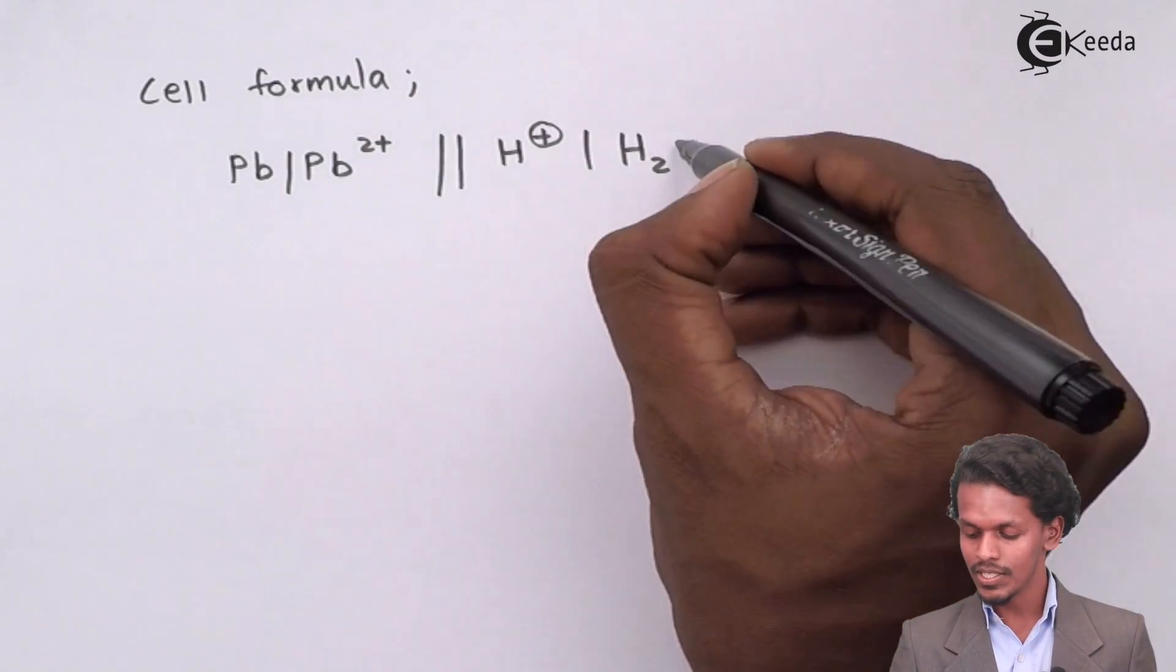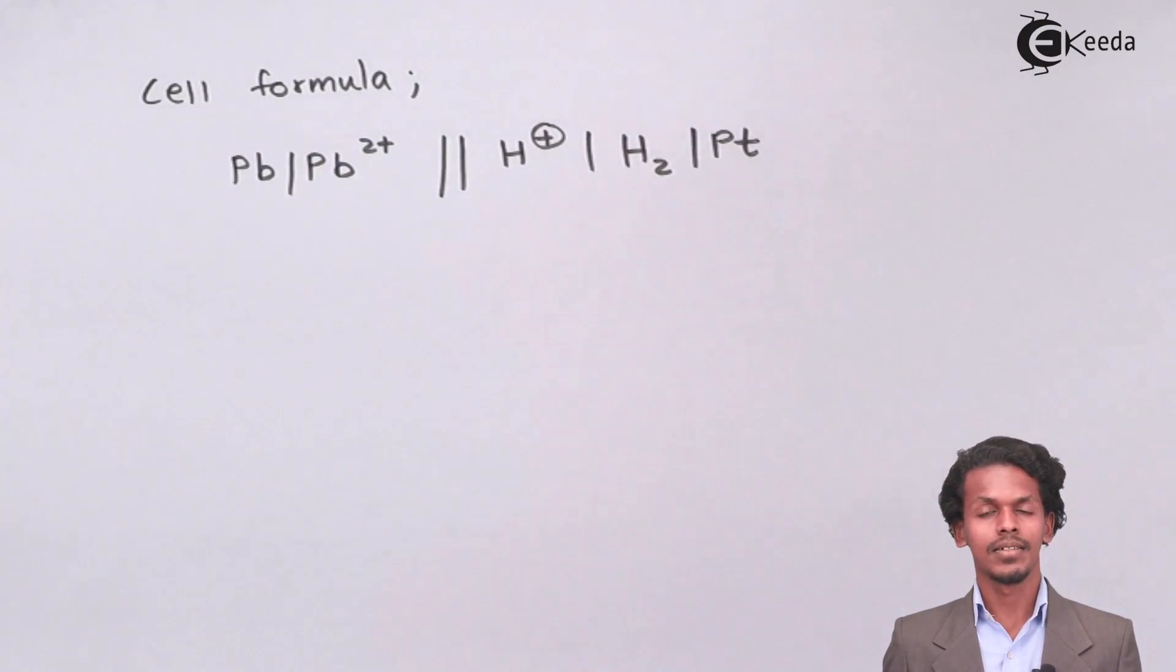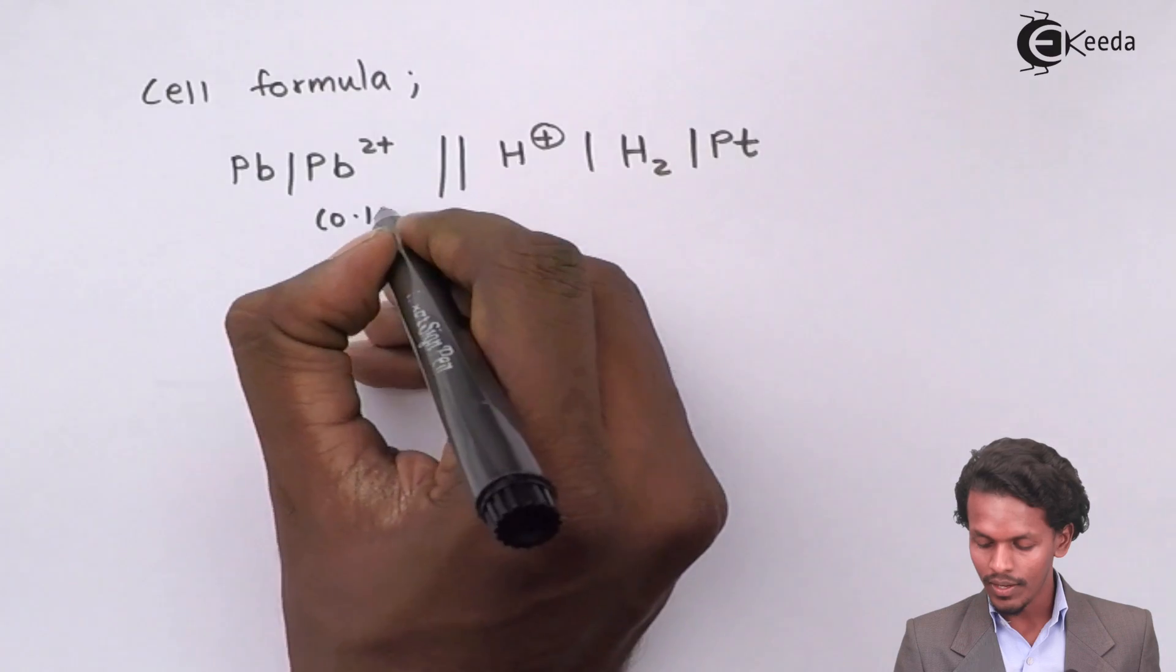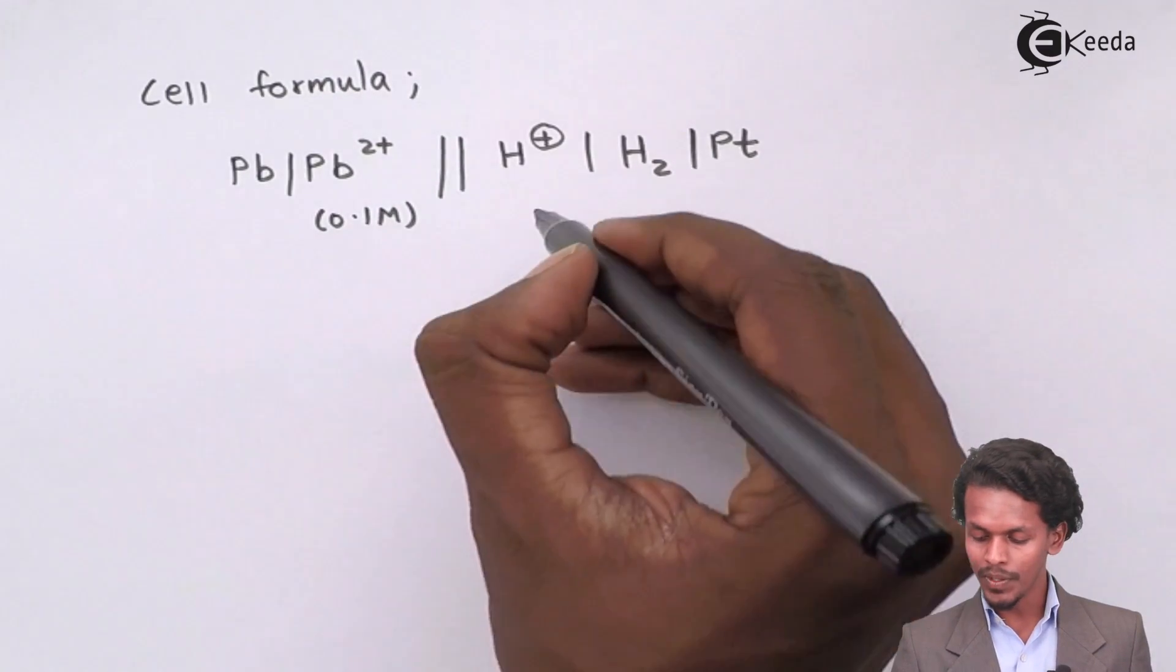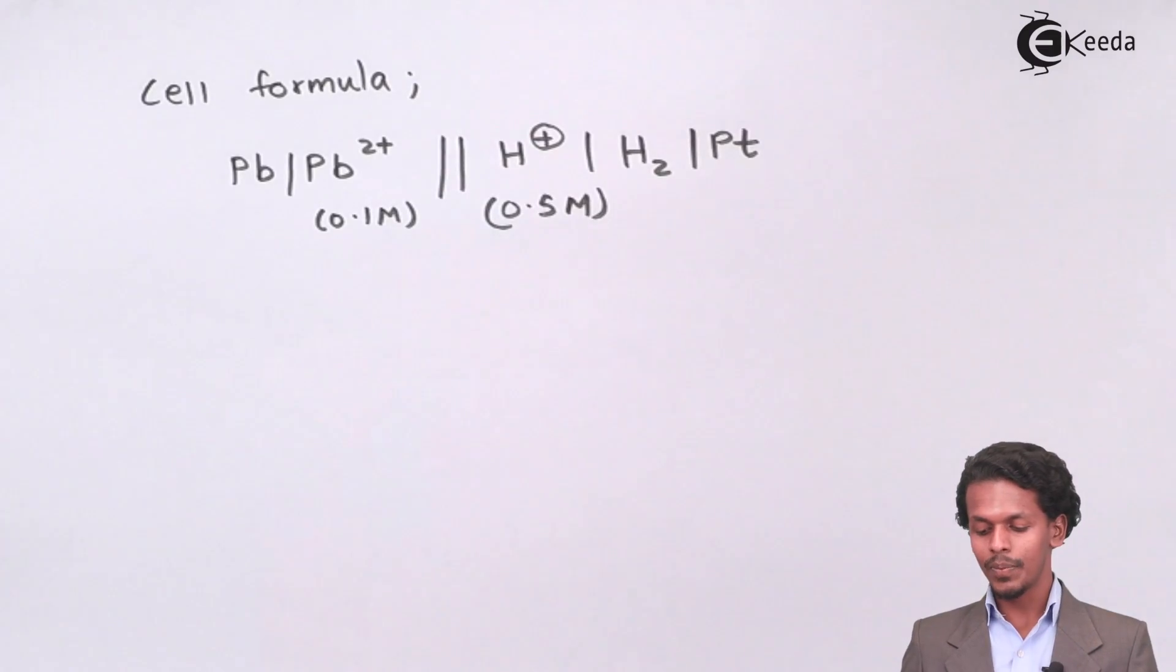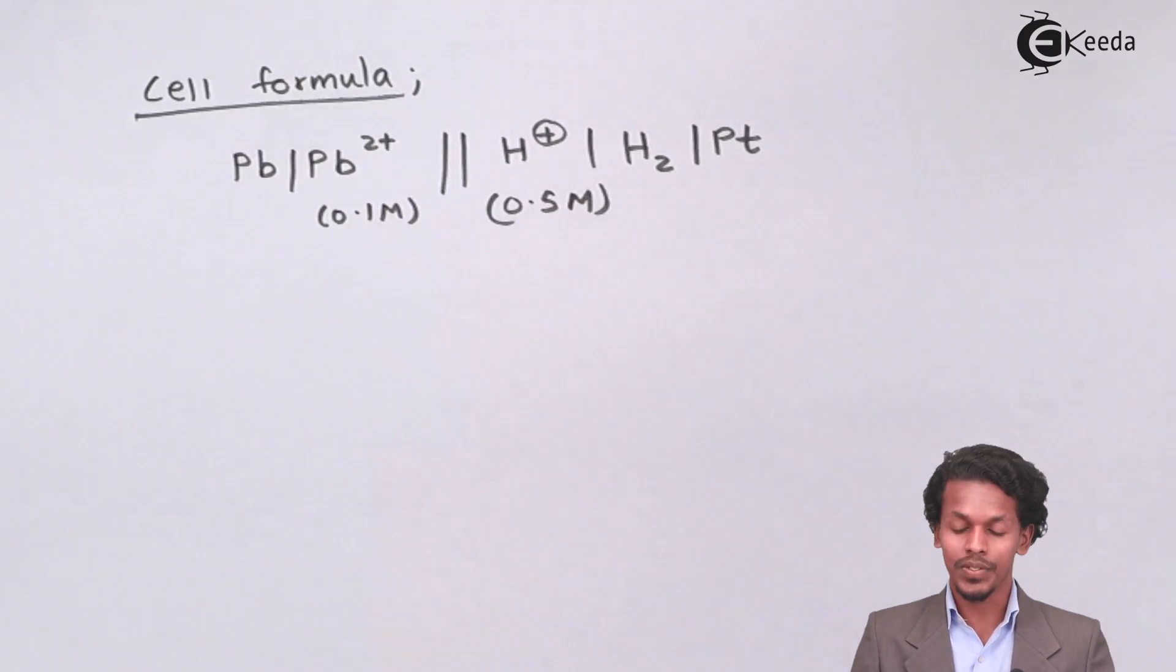For that, we have to attach an inert electrode also because H2 is present in gaseous form. We can usually add platinum as an inert electrode. The concentration of Pb2 plus was 0.1 molar and concentration of H plus was 0.5 molar. This is how we represent the cell formula.